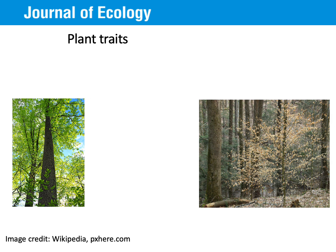Plant traits are really just characteristics of plants such as average height, leaf thickness, or wood density. For predicting susceptibility to CNDD, we think about plant traits that are correlated with tissue defense, because the way in which trees defend their tissues against pathogen infection or herbivory may say something about whether their seedlings can withstand attacks from these plant enemies.